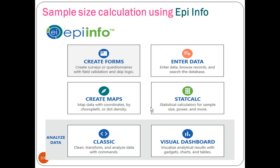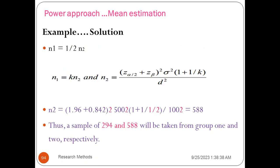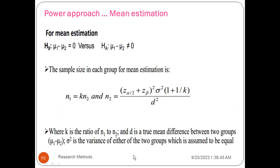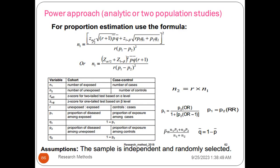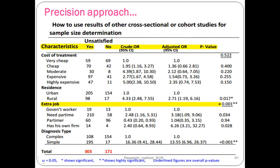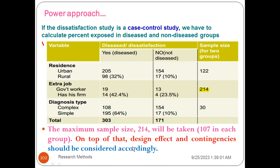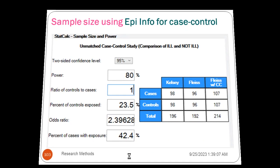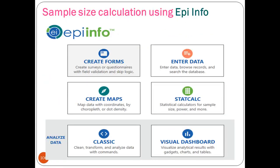For example, this is a double population mean formula, the proportion, the single mean, the single proportion, the associated factor, the item, the cross-sectional way, the cohort. For example, the case control was used using software.